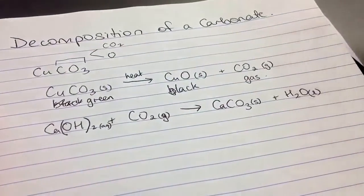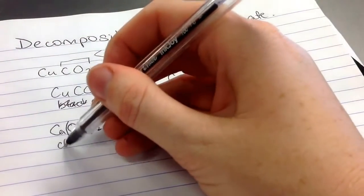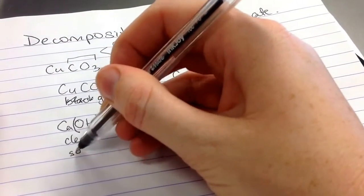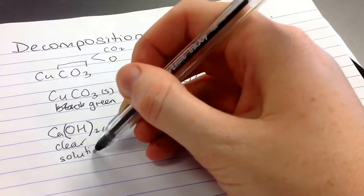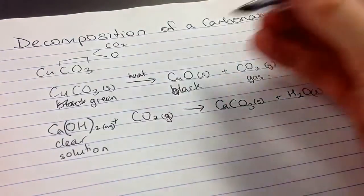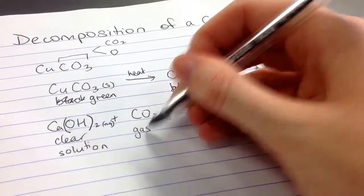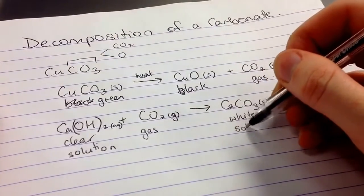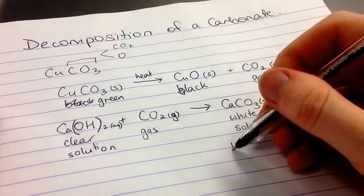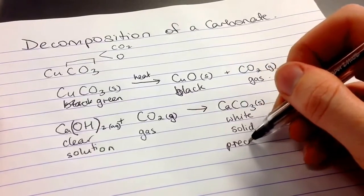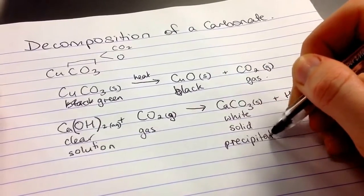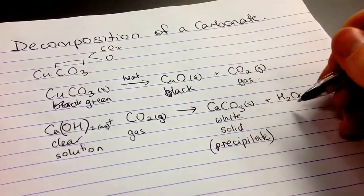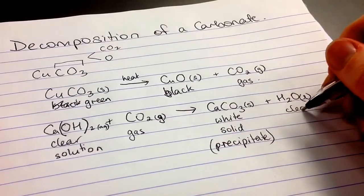In this case, when we tested the gas, we had a clear solution. And the clear solution with this gas formed a white solid, also known as a precipitate. That's what we call it. And a clear liquid water.